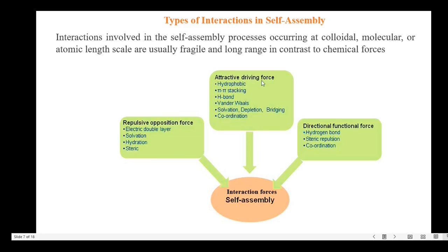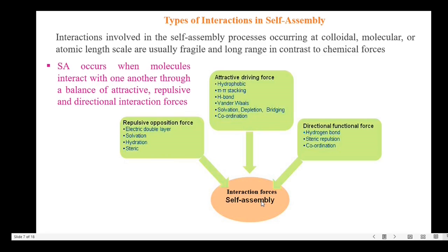Examples of attractive driving forces include: hydrophobic, pi-pi stacking, hydrogen bonding, van der Waals, solvation, depletion, bridging and coordination. For repulsive opposition forces: electrostatic double-layer, solvation, hydration and steric. The directional forces include: hydrogen bonding, steric repulsion and coordination. Therefore, self-assembly occurs when molecules interact through a balance of attractive, repulsive and directional forces. Usually these forces are weak — about 2 to 250 kilojoules per mole — so if adequate number of building blocks are present, they form very stable self-assembly structures.